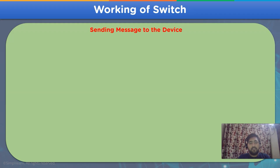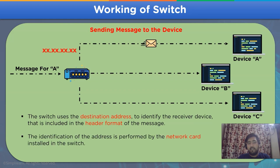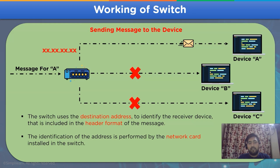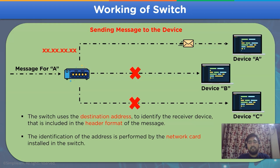Now let's look into the working of a network switch. The first scenario is when a message is received by the switch and is to be forwarded to a particular device. In this case, we are receiving a message for device A, which will be shared only to device A according to the address mentioned in the header format. This decreases the network traffic in the channel and also prevents the message from reaching device B and device C.